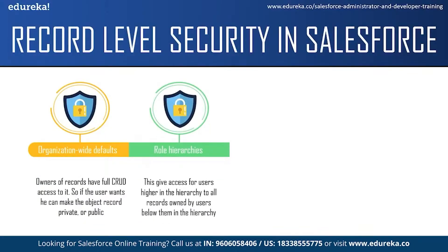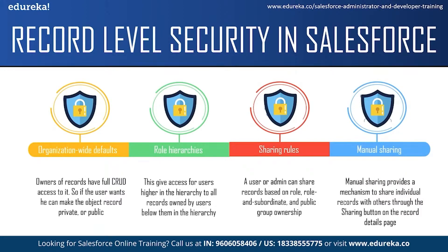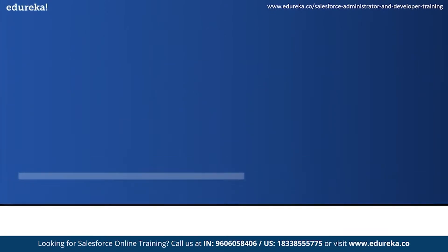The second way to manage record access is role hierarchy, which gives users higher in the hierarchy access to all records owned by users below them. For example, managers can view all sales representatives' records, but representatives can only see their own. The third way is sharing rules: a user or admin can share records based on roles, subordinates, and public group ownership. The fourth way is manual sharing, which lets end users share individual records through the Sharing button on the record detail page.